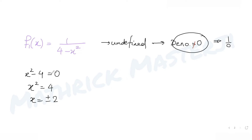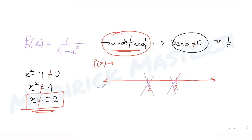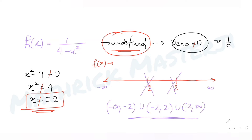So x cannot equal ±2, because that would make the denominator zero and the function undefined. Therefore, for f1(x), the domain is (-∞, -2) ∪ (-2, 2) ∪ (2, ∞) — all real numbers except x = -2 and x = 2.